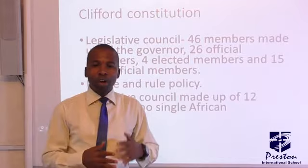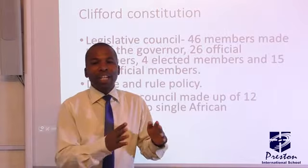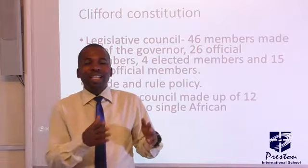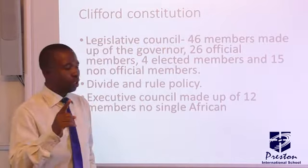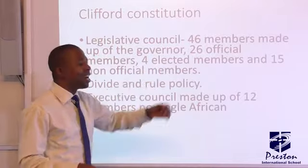The elective principle meant that elections were to be conducted in two major places in Nigeria: Lagos and Calabar. However, it was a limited franchise. People in Lagos or Calabar could only vote under two conditions — they must have resided there for a whole year and must earn at least one hundred pounds. Three members were elected from Lagos and one from Calabar, making four elected members in total.